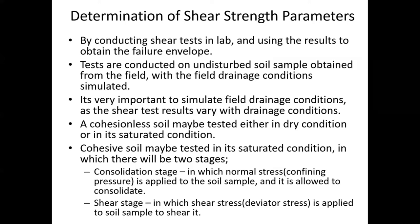For a particular normal stress, how much shear stress can the soil take? That is what you basically plot. For different values of sigma and tau, you mark all those points in the sigma-tau space and join them. Once you join those points, you get a line representing your failure envelope. The tau intercept of the failure envelope is your C value and the slope is your phi. That is how you obtain results from all these tests.